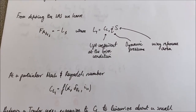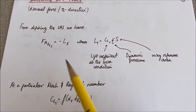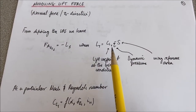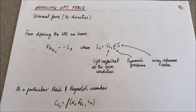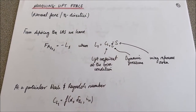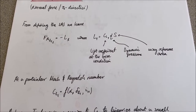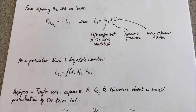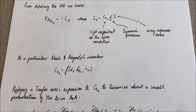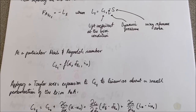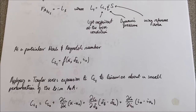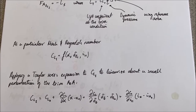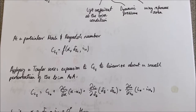We call this the lift vector associated with the trim condition, so it has a subscript one. We call that the aerodynamic force in the ZS direction associated with the trim condition. We can write the lift force as the lift coefficient associated with the trim condition, multiplied by the dynamic pressure, multiplied by the wing reference area. At a particular flight condition — namely a Mach and Reynolds number — the lift coefficient is a function of angle of attack, elevator deflection angle, and the inclination angle of the horizontal tail. This is very similar to how we formulated the drag coefficient.